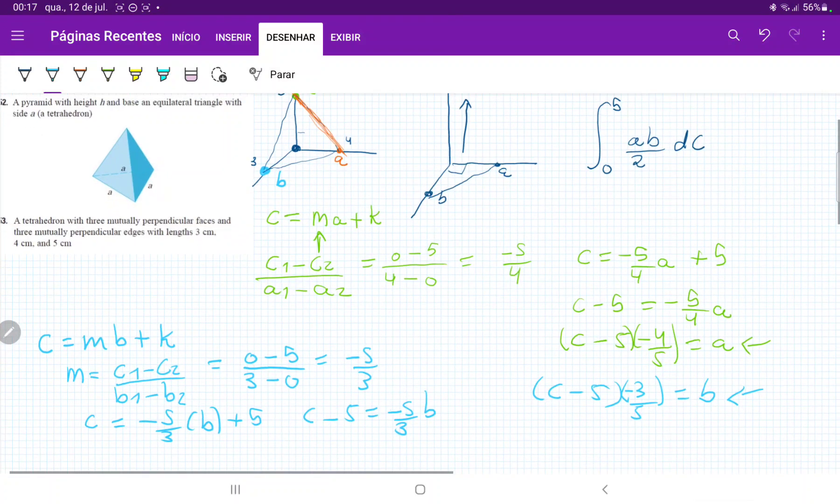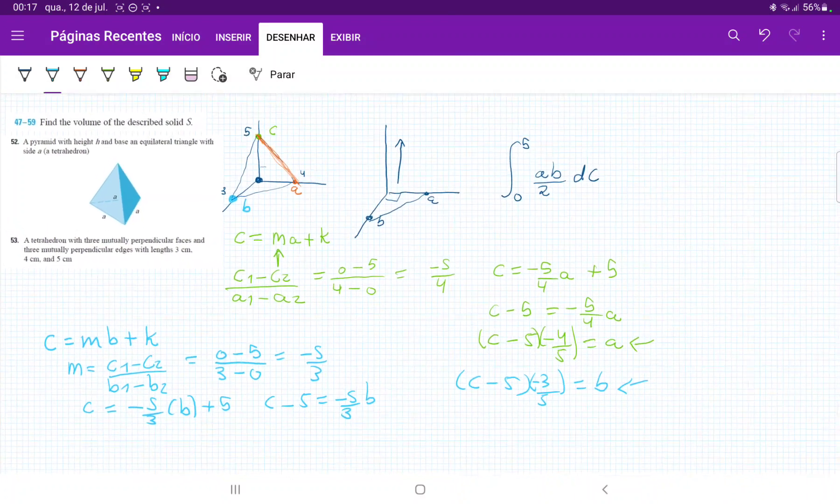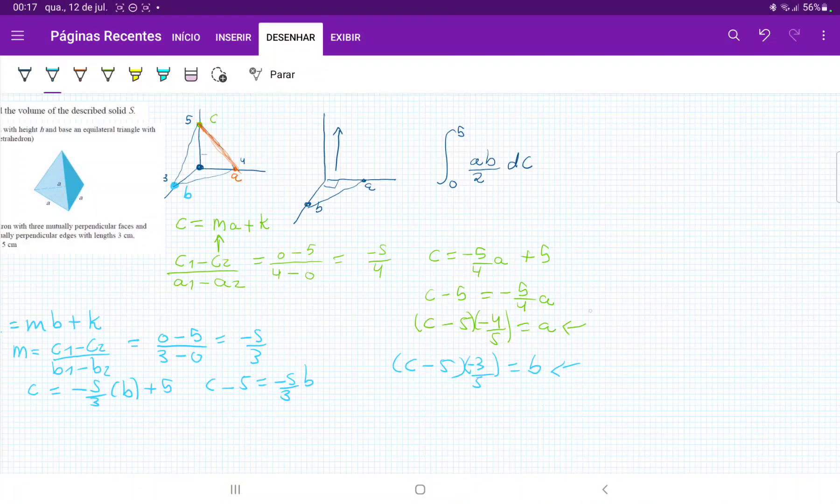So we were basically able to express A and B in terms of C. So if we're able to do that, now we can put these things back into our integral. So this is basically the same as the integral from 0 to 5. I'm going to remove this one-half outside because that is a constant. And then where we have A, we're just going to have this expression.